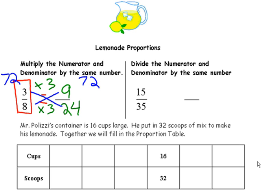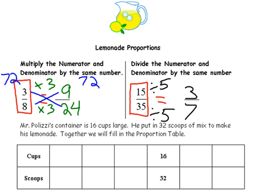Another way to get an equivalent proportion is to take the ratio 15 to 35 and divide both parts by the same number. If I divide 15 by 5, I get 3. If I divide 35 by 5, I get 7. So I'm finding an equivalent ratio, kind of like how I'd reduce a fraction. And 3 to 7 is an equivalent ratio of 15 to 35 — 15 over 35 is in proportion to 3 sevenths.